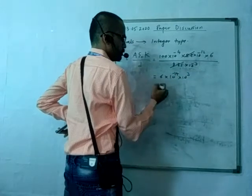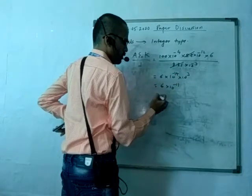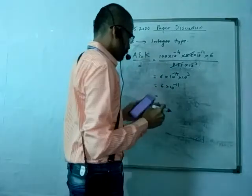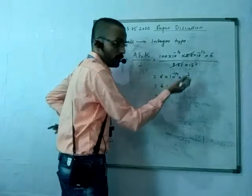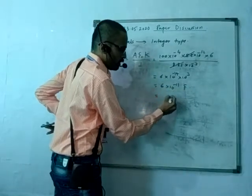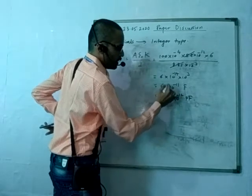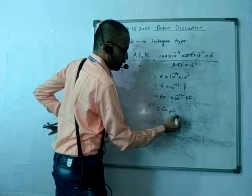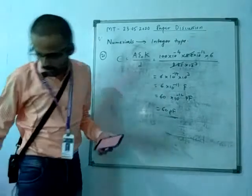To get the answer in integer form, we need picofarad. Converting to 10⁻¹² makes it 60 picofarad. That's your answer. Let's go to the next problem.